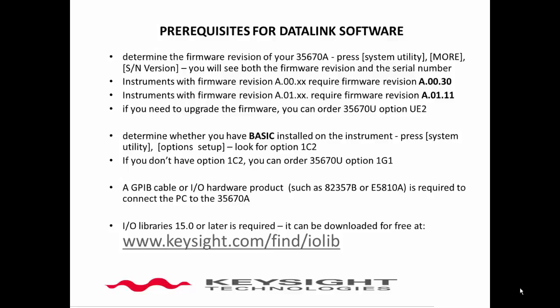If the first part of the firmware revision is A.00, you will need firmware revision A.00.30. If the first part of the firmware revision is A.01, you will need A.01.11. If you do not have the most current firmware, you can either download it from the website or you can purchase it on a floppy disk by ordering part number 35670U, option UE2.